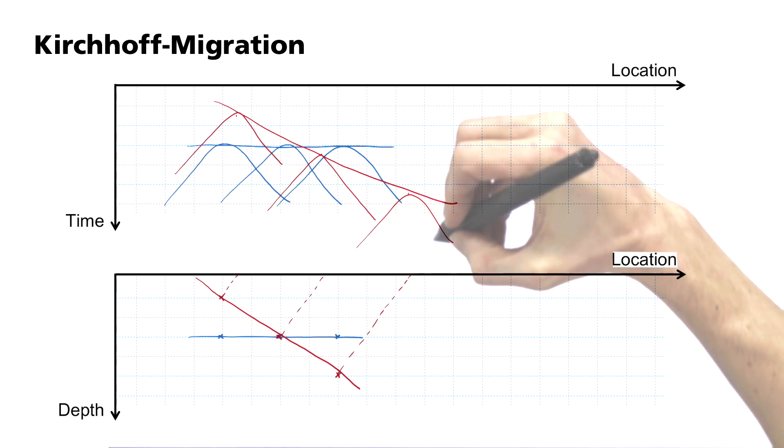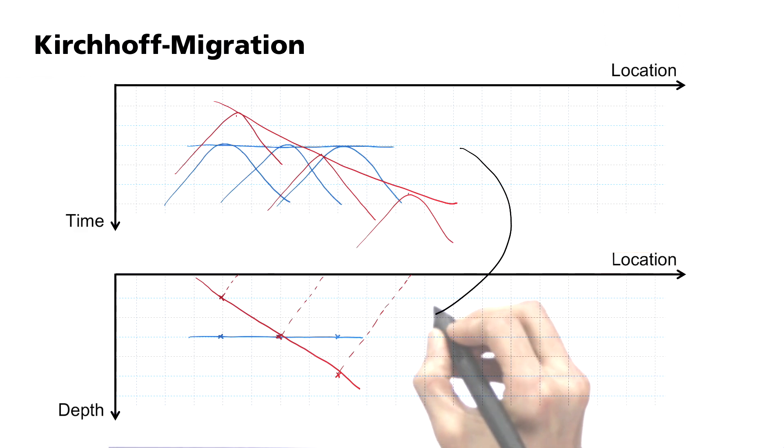In this case, the seismograms are recorded directly at the location of the geophones, even though the reflection point here is further to the left. The goal of the migration is to reverse precisely this effect of the distortion.